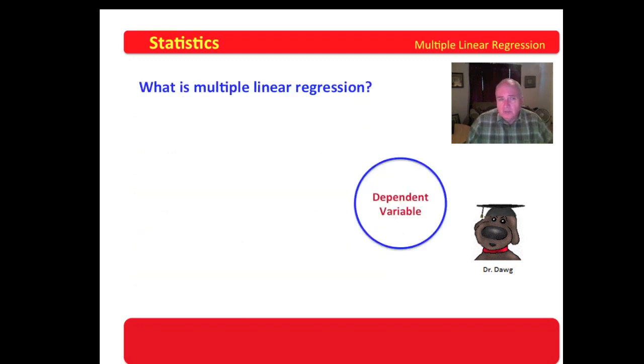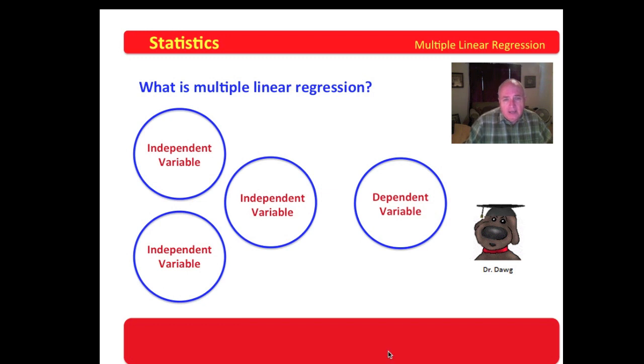Now, what is multiple linear regression? You may ask yourself. We'll start out here, and we will look at one dependent variable that we may want to model. If we want to model that dependent variable, we may identify several independent variables. In this picture, we have identified three distinct independent variables, and we want to use them to model the dependent variable.